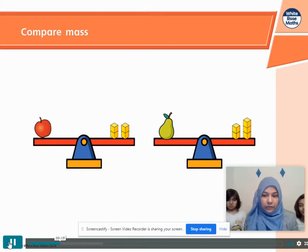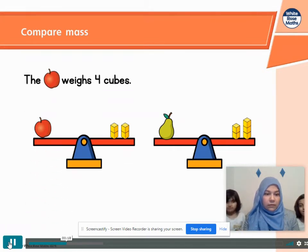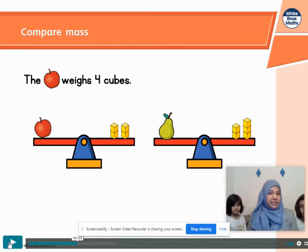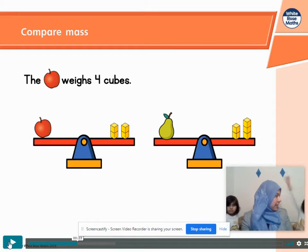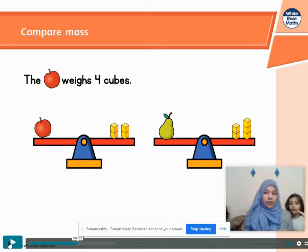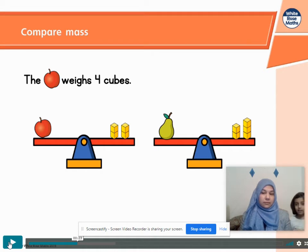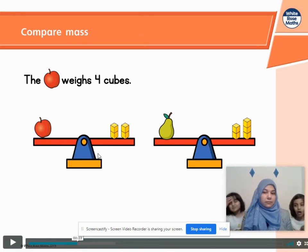What can it tell us about the apple and the pear? We can see that the apple weighs four cubes. So if the apple weighs four cubes, how much do you think the pear weighs then, Shafia? The pear weighs five. And how do you know that? Because the pear is on one side with the five cubes and both of them are on equal sides. So well done. Cubes.